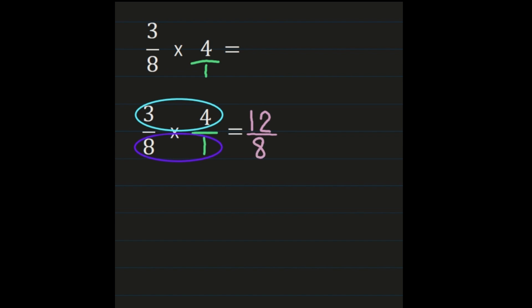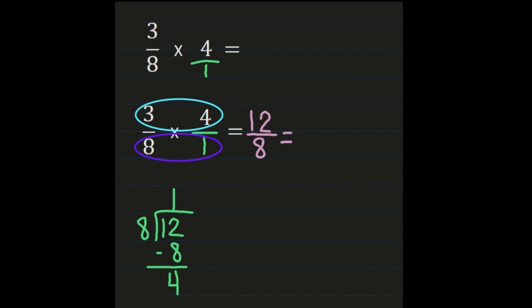Here I have an improper fraction, so I'm going to want to turn it into a mixed number. To turn an improper fraction into a mixed number, we divide the numerator by the denominator. The numerator 12 goes on the inside and our denominator 8 goes on the outside when we set up our division problem. 12 divided by 8 is 1. 1 times 8 is 8. 12 minus 8 is 4. The quotient of 1 becomes our whole number. Our remainder of 4 becomes the numerator, and the denominator 8 remains the same. So now I have 1 and 4 eighths.